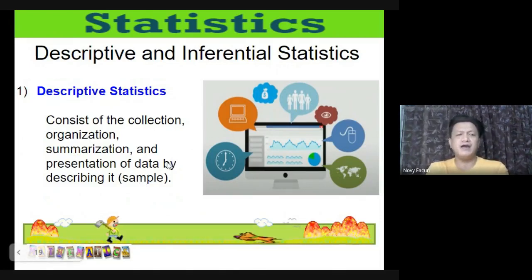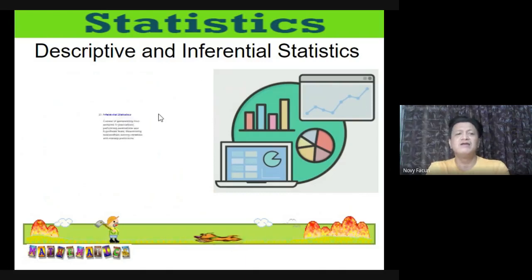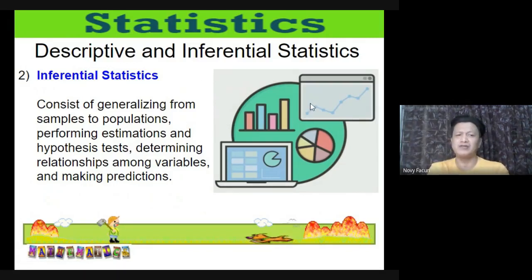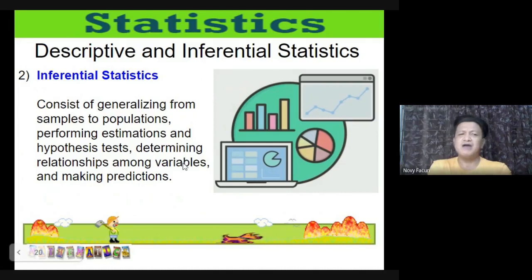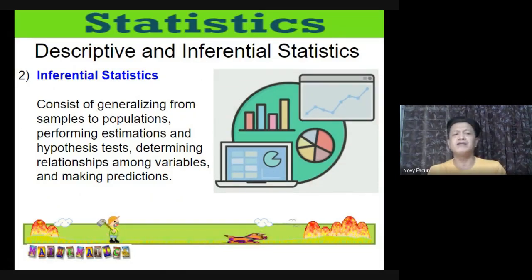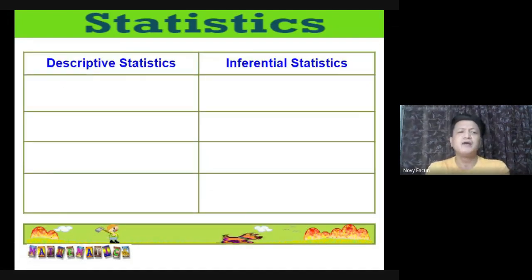Inferential statistics — from the word 'infer' — consists of generalizing from samples to populations, performing estimations and hypothesis tests, determining relationships among variables, and making predictions. From a sample, you generalize to the whole population, compare, determine relationships, and draw conclusions.